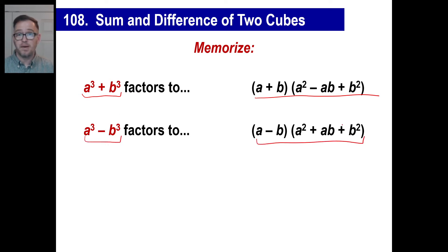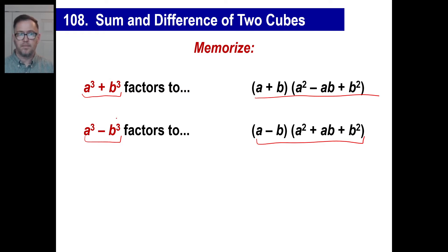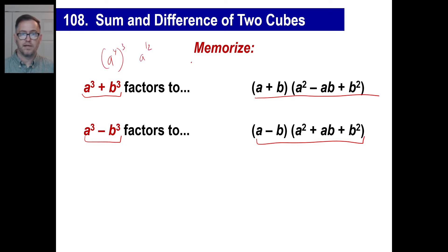That just needs to be memorized, and you can refer back to it as much as you'd like. Remember that a and b won't always be simple — you could have 2 cubed and 7 cubed, or even a to the 4th power cubed, which gives you a to the 12th power. You could have z to the 5th power cubed, which gives you z to the 15th power, and so on.